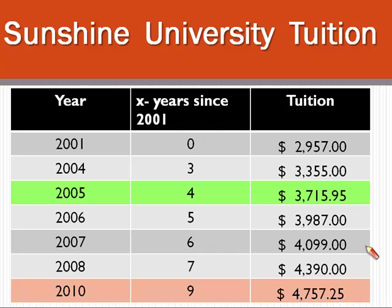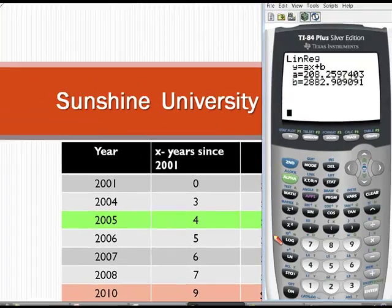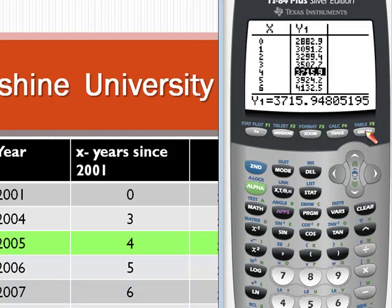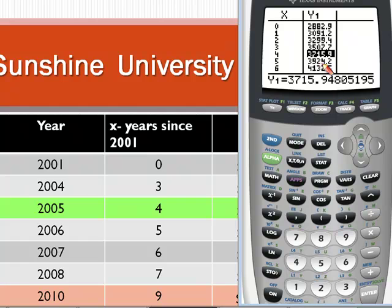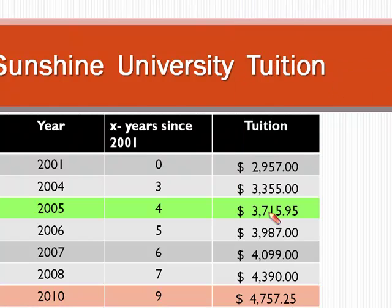These values can also be verified using the table feature of our calculator, so this would be a good time to get your TI graphing calculator. If I press Second and Table, I want to go four years past 2001. Scrolling down, you can see I'm at X equals 4, which corresponds to 2005. Highlighting the Y column gives me 3,715.94805. We're going to round to the nearest hundredth, so that becomes $3,715.95 — which matches what we found.